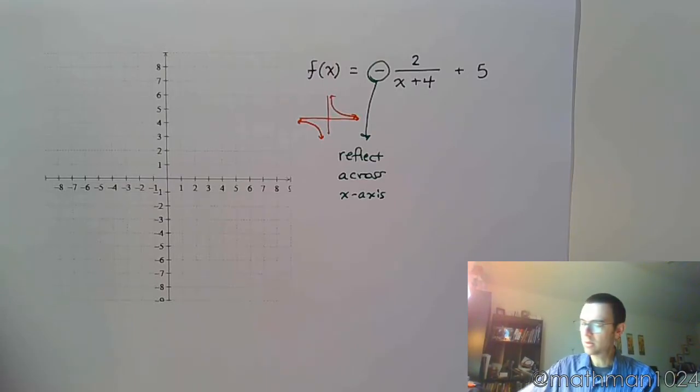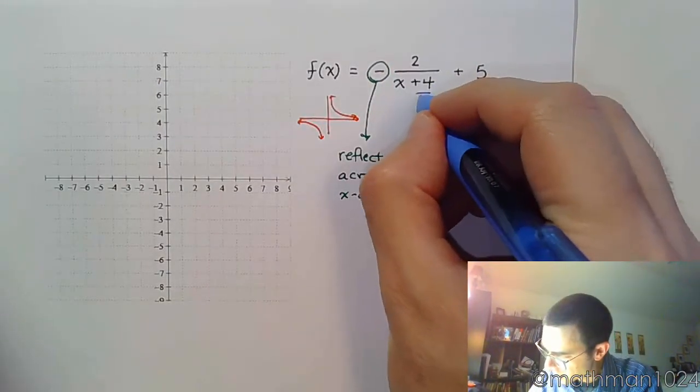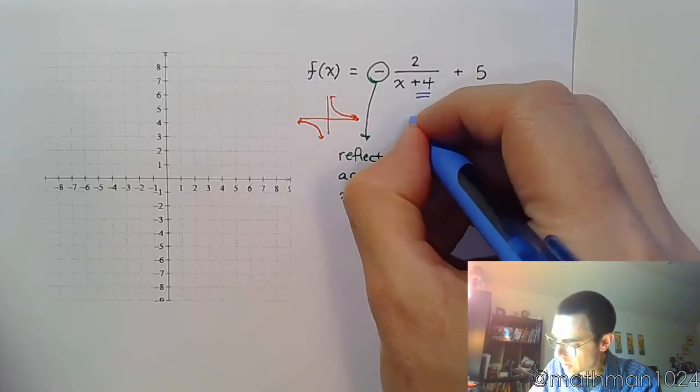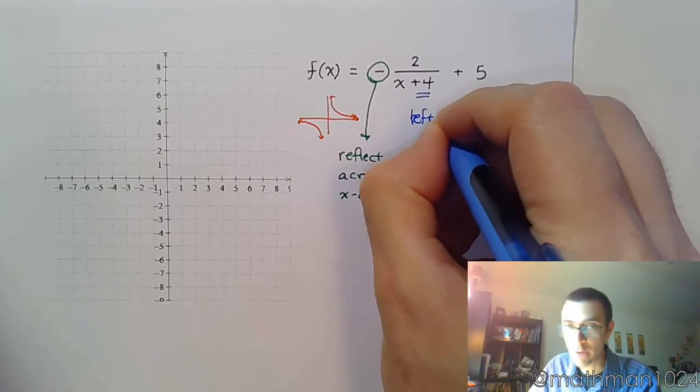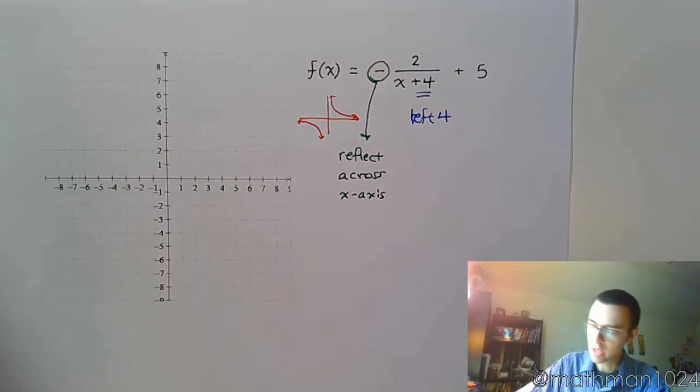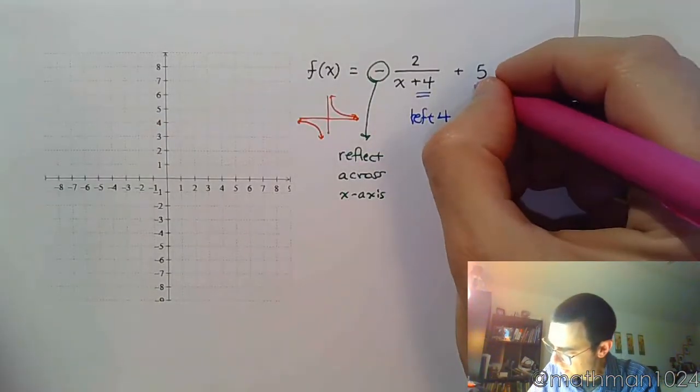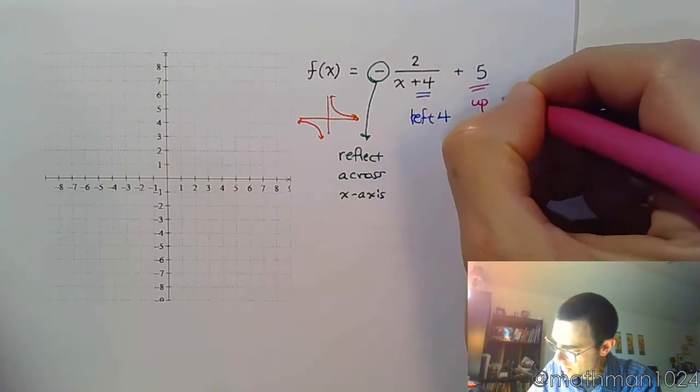What else are we doing with it? Inside, we see this plus 4, so that means we're going to go to the left 4. You've got to do the opposite of what you see. And the plus 5 means I'm going to go up 5.